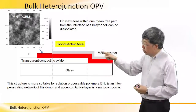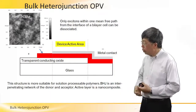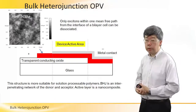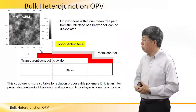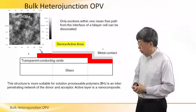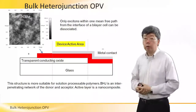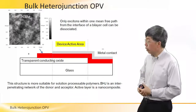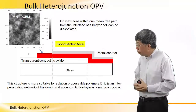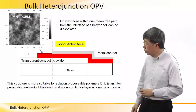As you can see on this slide, there is just one layer — the red layer — between the transparent conducting oxide and the metal electrode at the top. However, inside this red layer, it is actually a mixture of the two components, the donor and the acceptor.